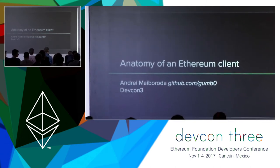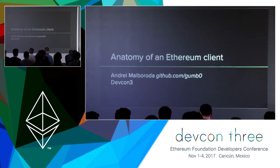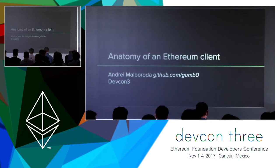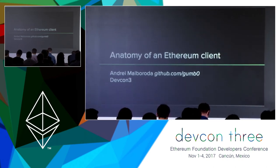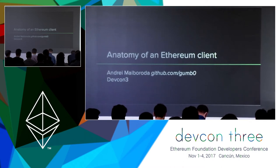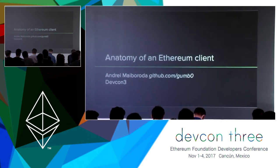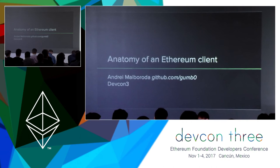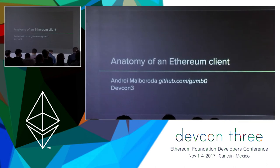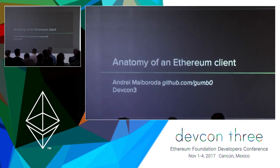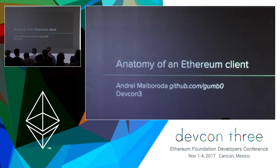A client is a piece of software that allows you to connect to the Ethereum network, run a node, and interact with Ethereum. All of the teams working on clients clearly separate any kind of end user-friendly graphic interface from the backend core part of the client. In this talk, by 'client' I mean only this backend part, which doesn't necessarily intend to be user-friendly. Essentially, a client is an implementation of the Ethereum protocol as specified by the yellow paper, the main formal specification of Ethereum — but not only that.